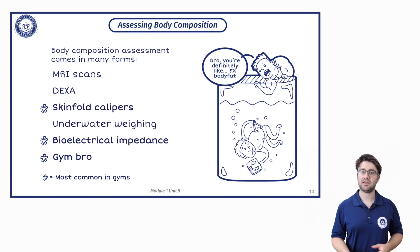We have bioelectrical impedance, which is where you either stand on some scales or you may hold some form of handheld device, or you may find a machine that's a combination of the two where you stand on some scales and hold some handles. It basically sends an electrical signal around your body. And based on how long that takes to travel around your body, it comes up with some estimates for your body composition.